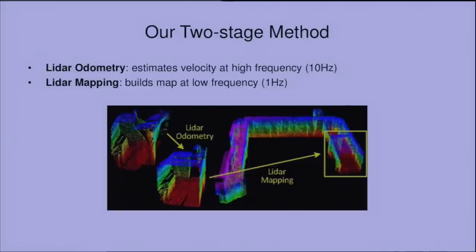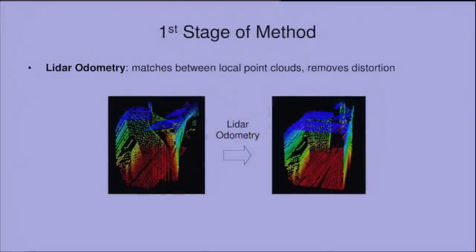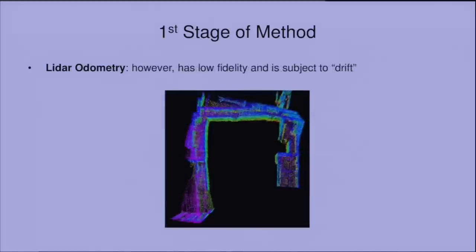Now in comparison, our method is a real-time method. And the reason that it achieves real-time performance is separation of the problem into two sub-problems such that each sub-problem is easier to solve. There is a step that focuses only on local point clouds, removes distortion in the point cloud caused by extrinsic motion of the LiDAR. Then there is a mapping step that matches the local point cloud to the map and builds a map. But also because the odometry step only matches local point cloud to local point cloud, it has lower fidelity. The motion estimation is subject to drift.